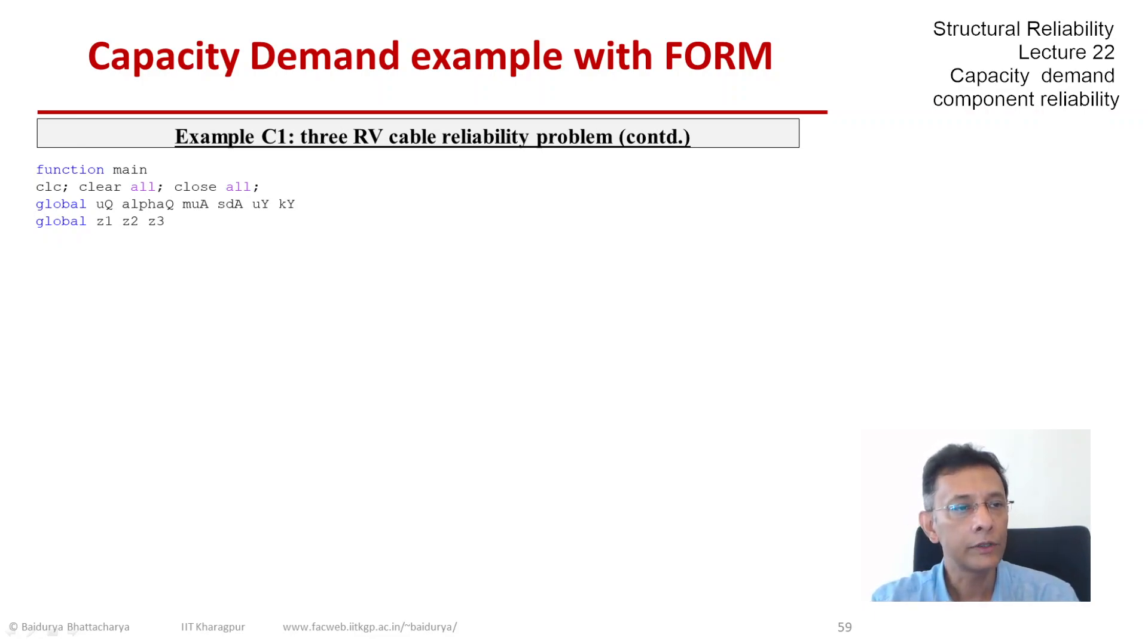What you see on the first few lines is I have shared certain variables that will be useful to transfer between the main program and all the functions or subroutines. The first global just deals with the distribution parameters for Q, A, and Y.